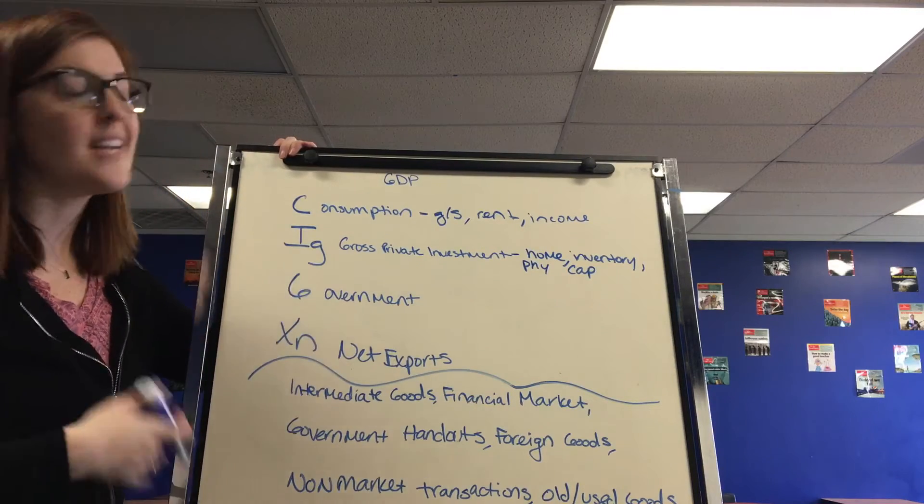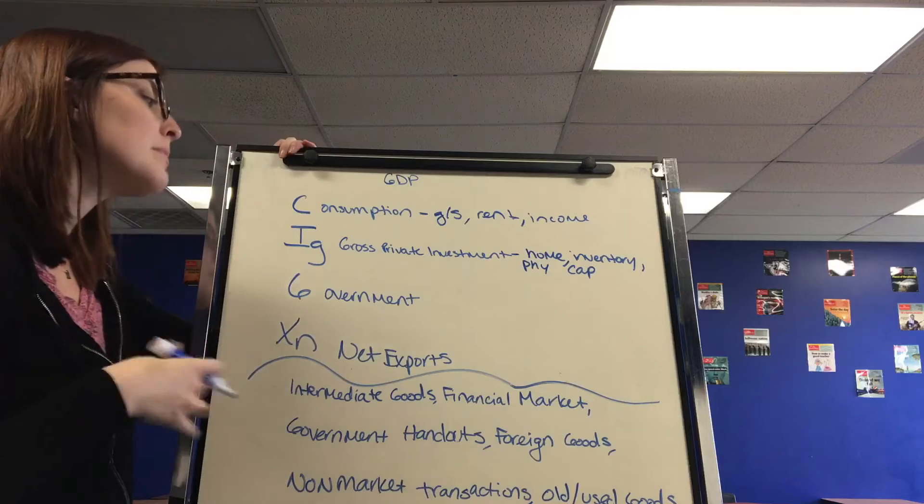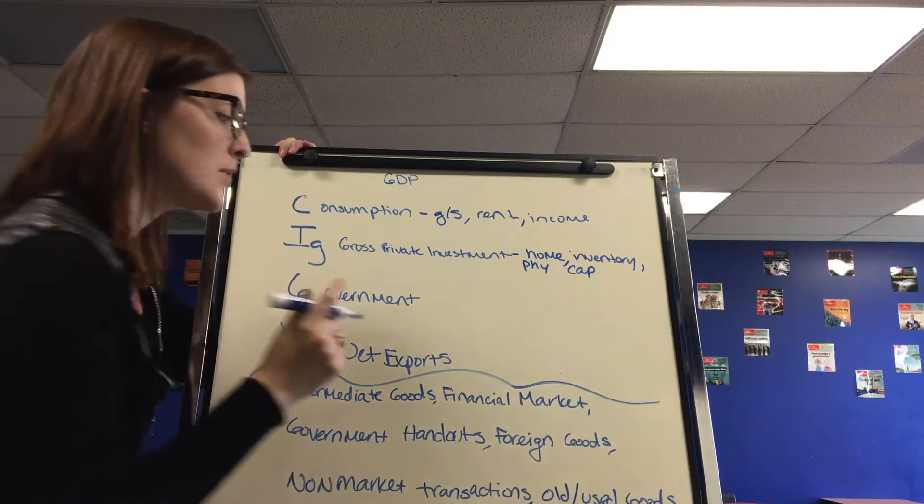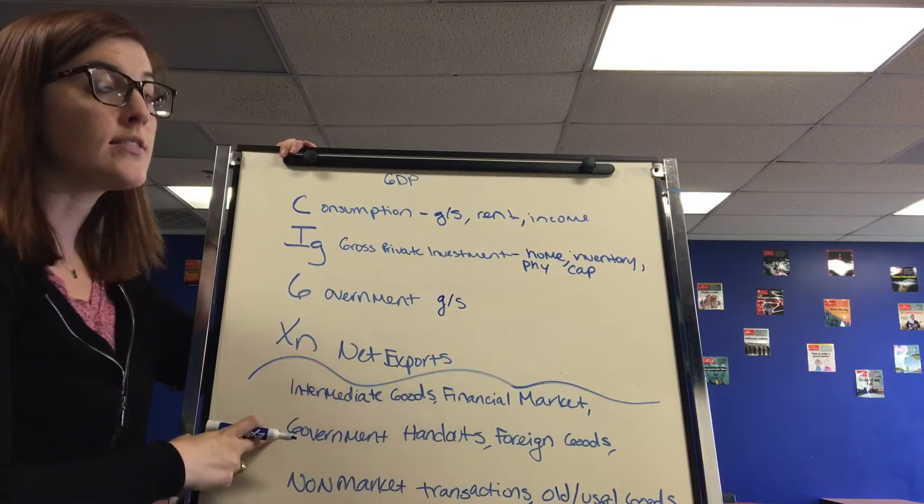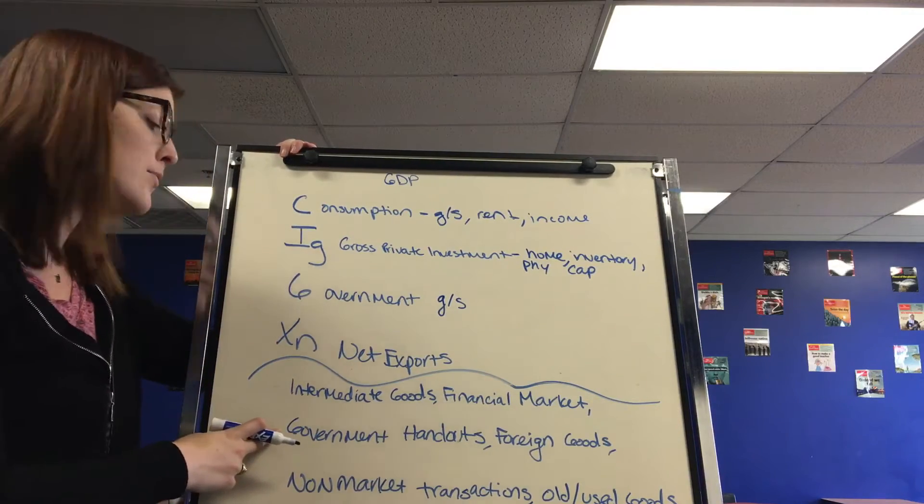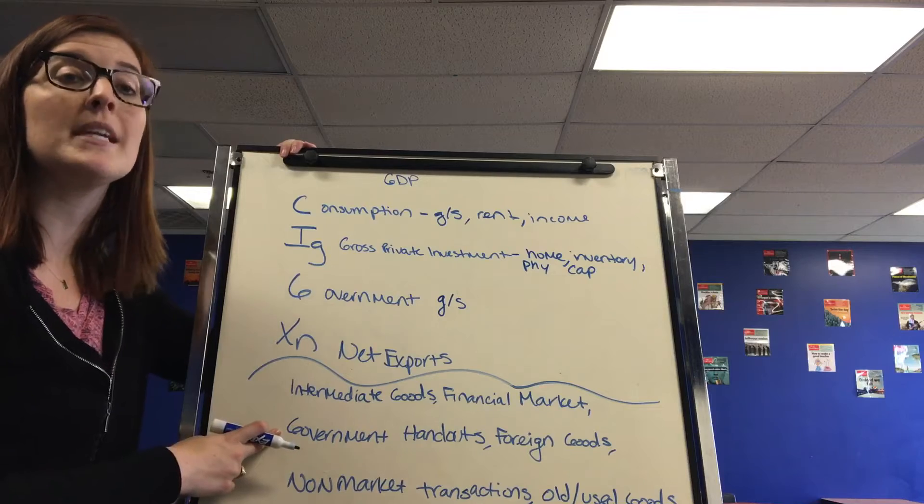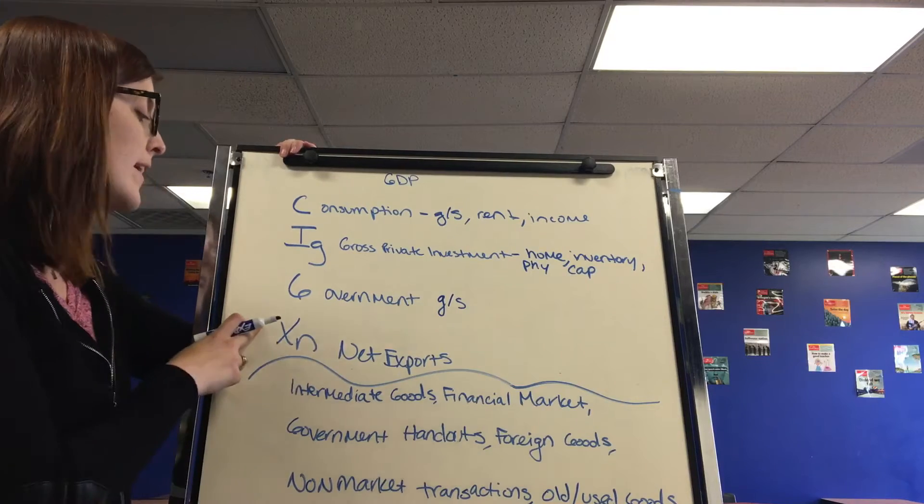G stands for government. And government's pretty easy. But you need to take note that it only counts when the government's receiving a good or service in return. Government handouts, also known as entitlement programs and transfer payments, do not count in GDP at all.